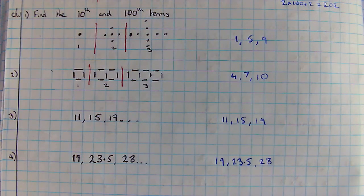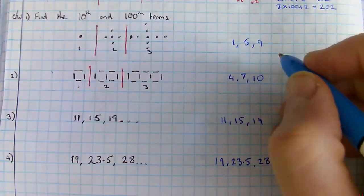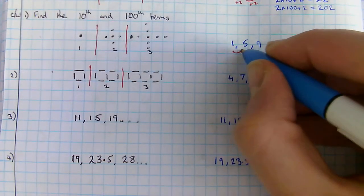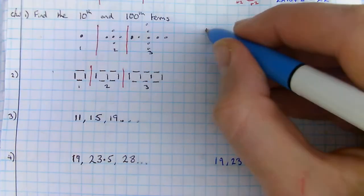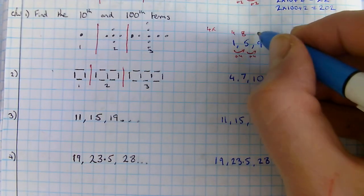Once we've looked at what numbers we've got, we need to make sure we know what the jumps are in our sequence. Here I'm going up by four each time, so I know it must be related to the four times table, which is four, eight, twelve.